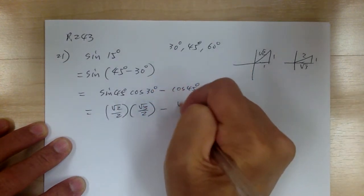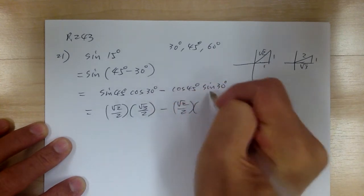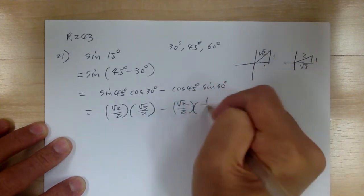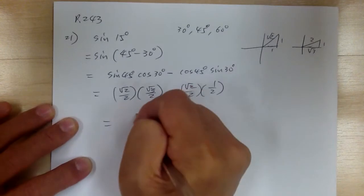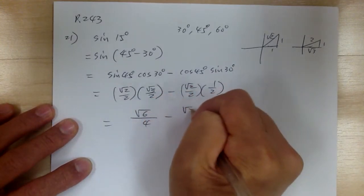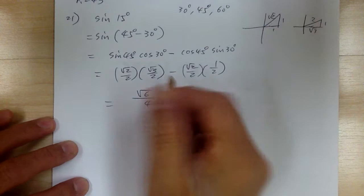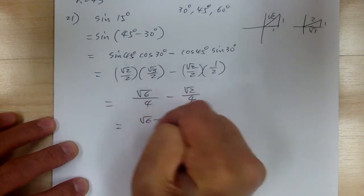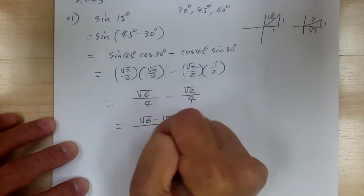Cosine of 45 is square root of 2 over 2, and sine of 30 is 1 half. So this will give you square root of 6 over 4 minus square root of 2 over 4. Putting it together, this gives you square root of 6 minus square root of 2 over 4.